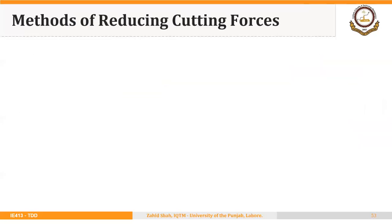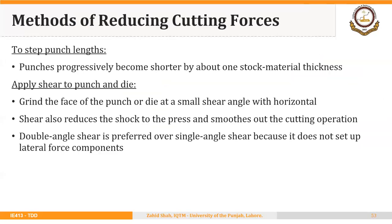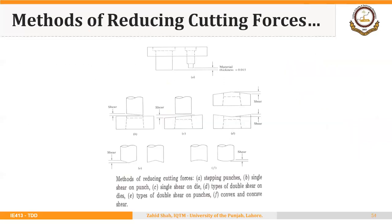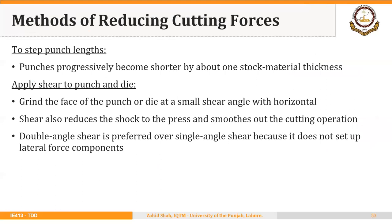There are two ways to reduce cutting forces. The first is to apply shear to the punch or die — grinding the face of the punch or die at a small shear angle with the horizontal. This also reduces shock to the press and smooths out the cutting operation. Double angle shear is preferred over single angle shear because it does not set up lateral forces.